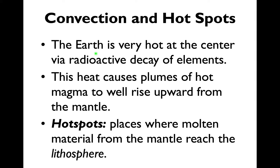Convection and hot spots: the core of the earth is very hot. What we think is happening is that specific radioactive isotopes of elements are decaying and producing a lot of energy and heat. There's a constant decay process — a lot of elements, a lot of mass, very dense. It's creating a lot of heat that heats up magma, which rises and circulates in large currents. On top of the earth there are places where this molten material actually reaches the lithosphere, and we call those hot spots.